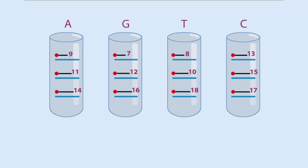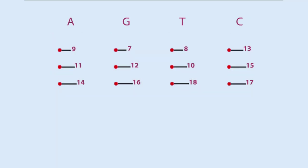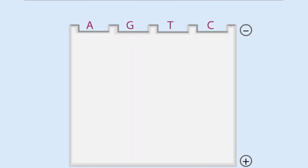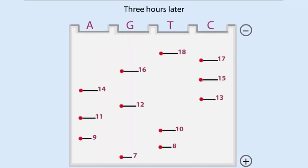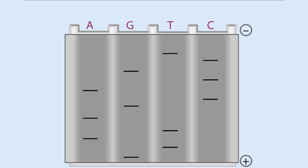The terminated fragments from each of the four reactions are denatured and separated by size using gel electrophoresis. The gel is auto-radiographed in order to visually detect the labeled DNA fragments.